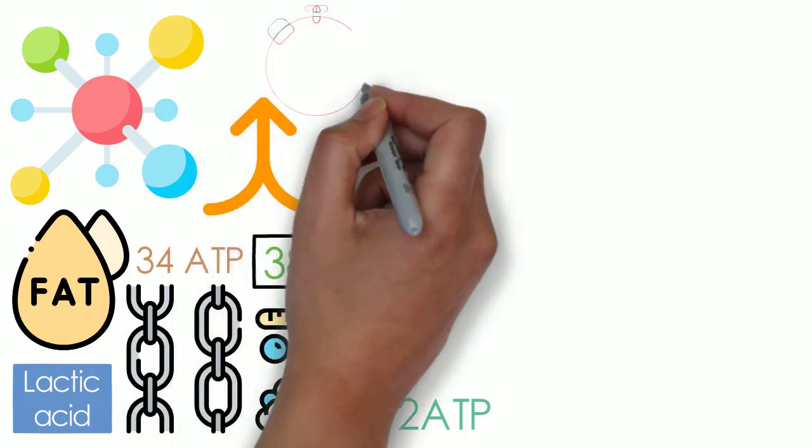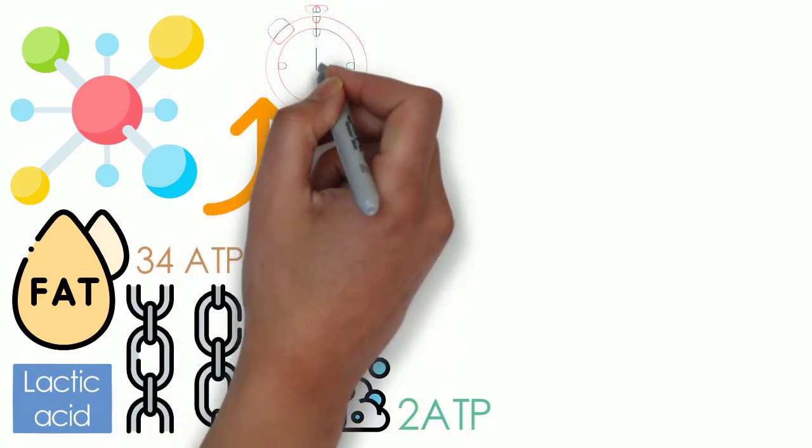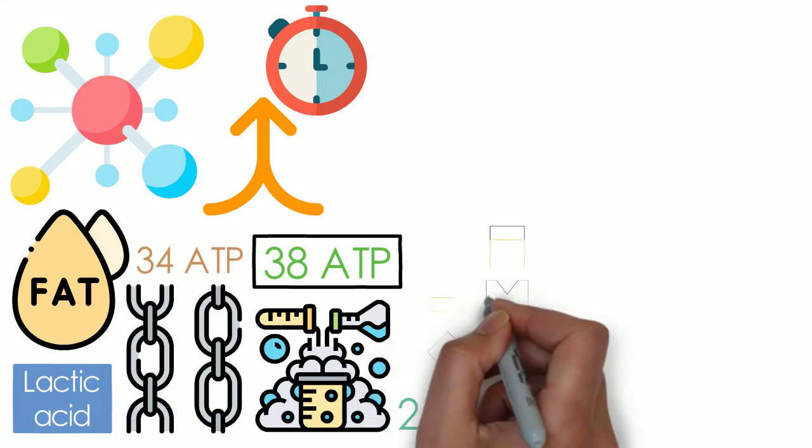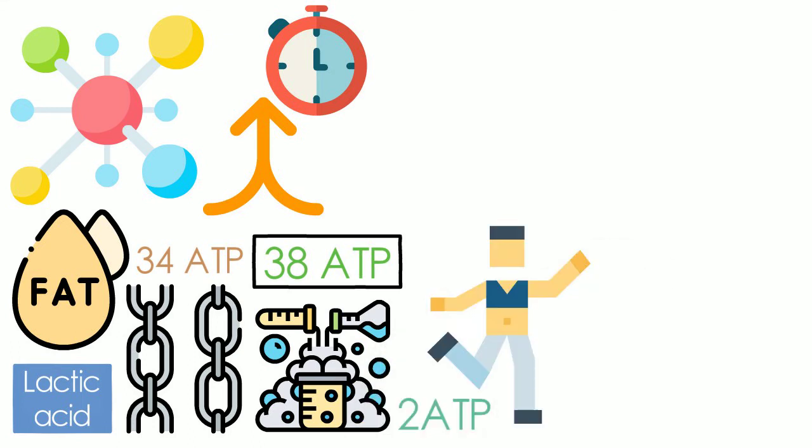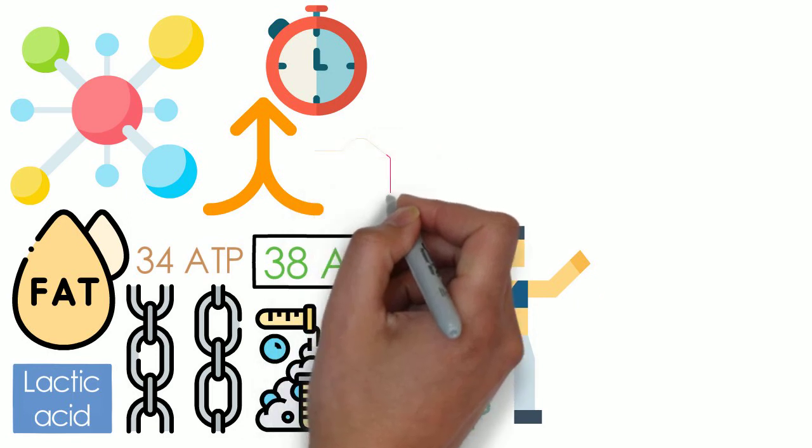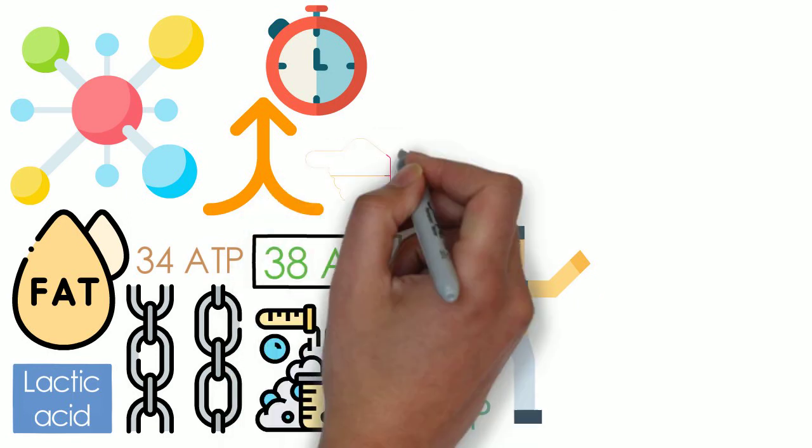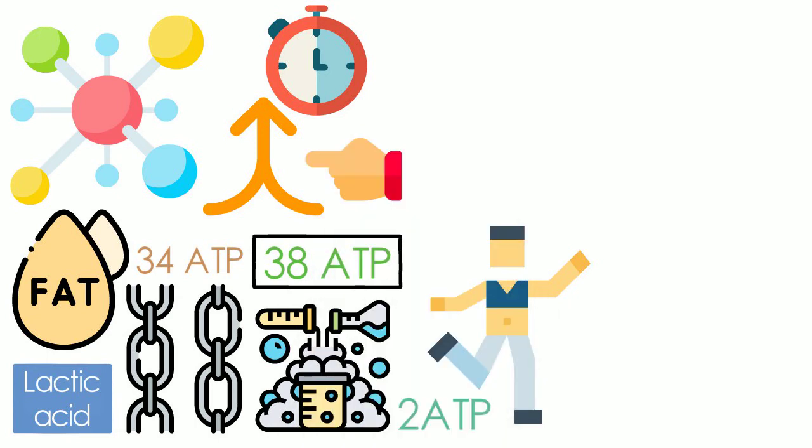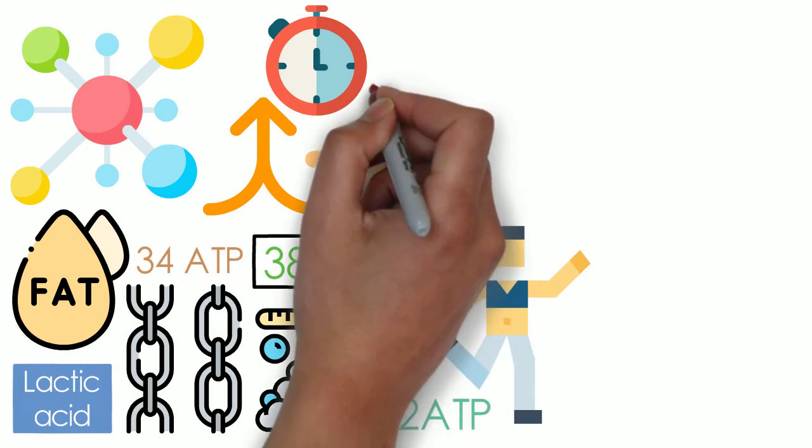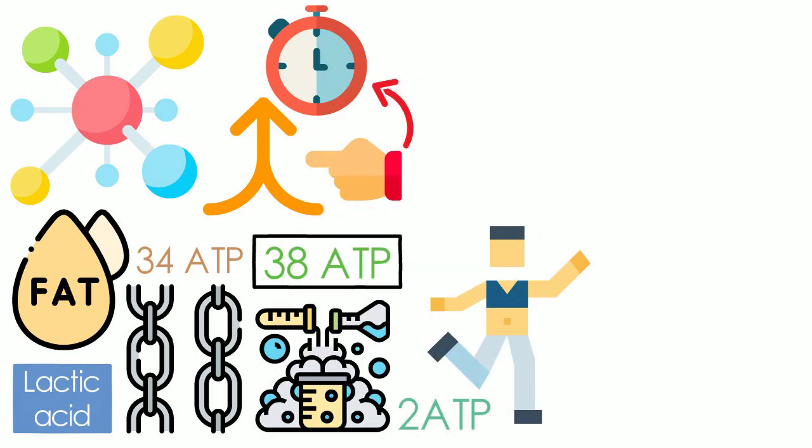This makes it the ideal energy source for longer exercise periods, like for a marathon runner. When exercising, aerobic exercises would draw energy from both glycogen and fats. This provides them with larger potential energy stores than the other two energy systems. And it is capable of giving you the energy your body needs from 3 minutes to an hour and above.